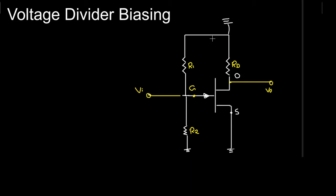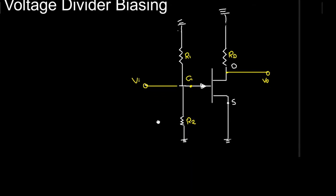This means that R1 is connected to ground as well as R2 is connected to ground. So I can say that Rd is also connected to ground and R1 is also connected to ground. Because these two resistances have a common terminal and are both connected to ground, I can replace them as a parallel combination — R1 and R2 can be replaced as a parallel combination. The Rd on the output side is also connected to ground in this form.